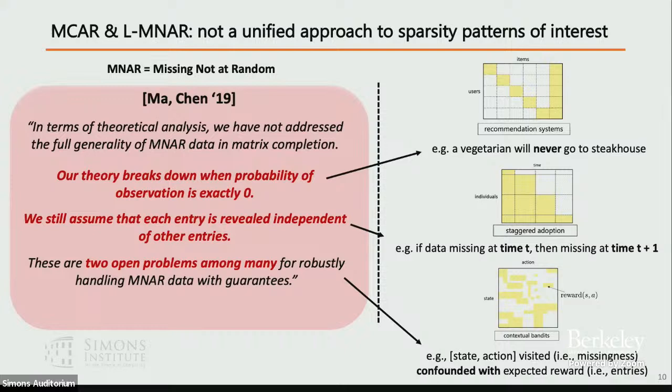From a causal lens, in contextual bandits the state-actions that are visited are going to be correlated or confounded with the expected reward. So you have this kind of correlation structure that needs to be thought about very carefully.